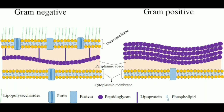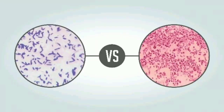This diagram helps understand the structural difference between Gram-negative and Gram-positive bacteria. A Gram-positive bacteria has only a cytoplasmic membrane with a thick peptidoglycan layer, whereas a Gram-negative bacteria has an outer membrane as well as an inner membrane with a very thin peptidoglycan layer. By Gram staining, Gram-positive bacteria appear purple while Gram-negative bacteria appear red or pink.